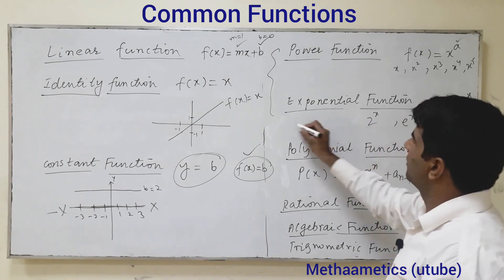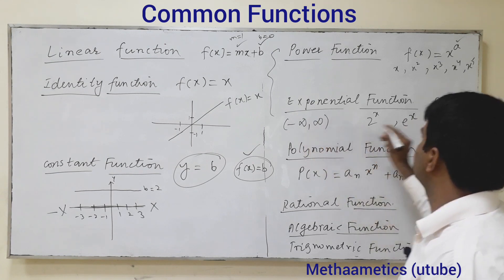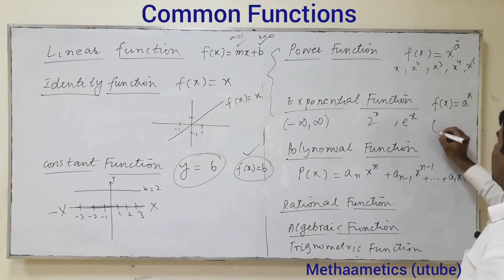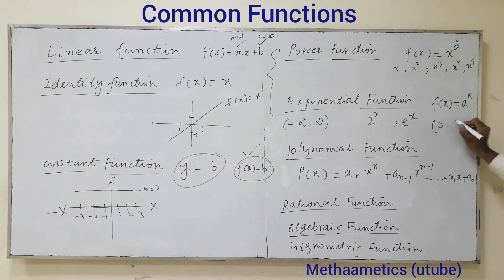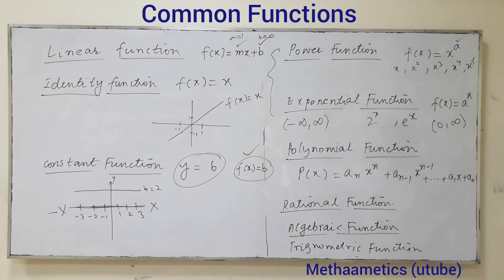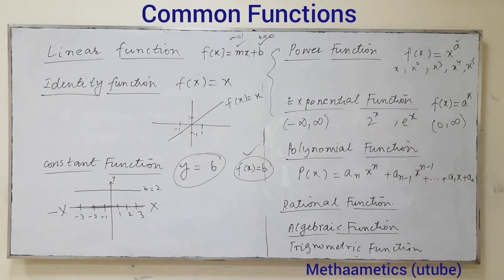An exponential function has a domain of minus infinity to infinity, but its range is always 0 to infinity — we never get 0 as an output. So we never assume 0 as a value of the exponential function; we always get positive values from the exponential function.